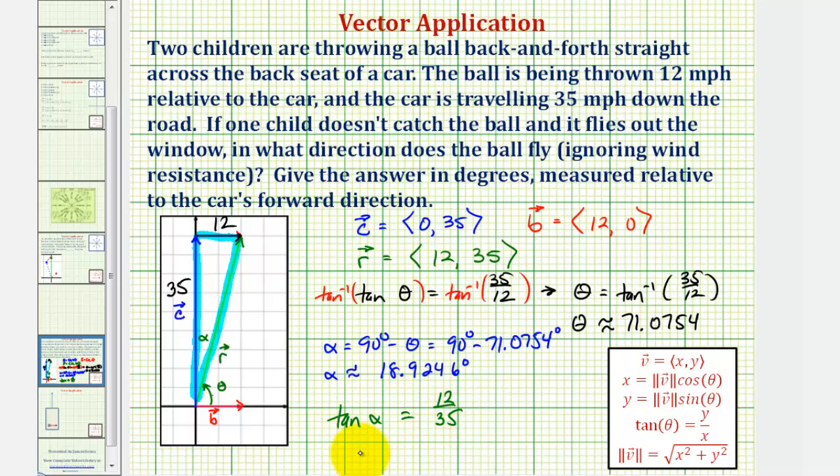Therefore, if we take the inverse tangent of both sides, we could say alpha equals inverse tangent of 12/35, and get the same result much faster.